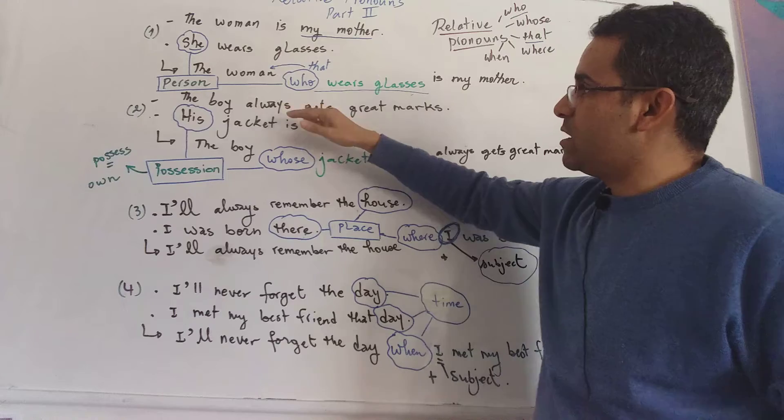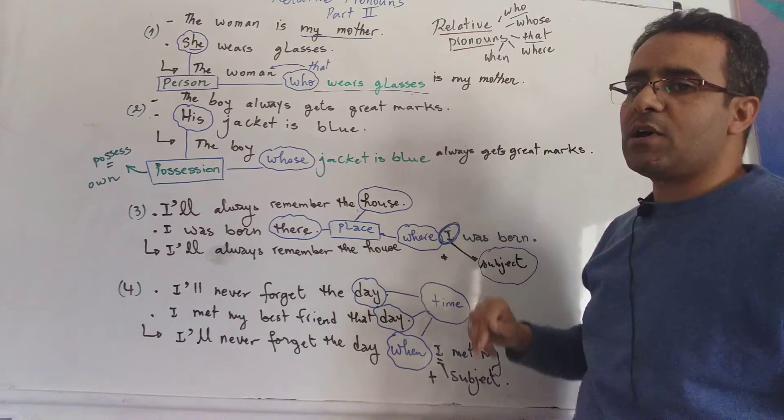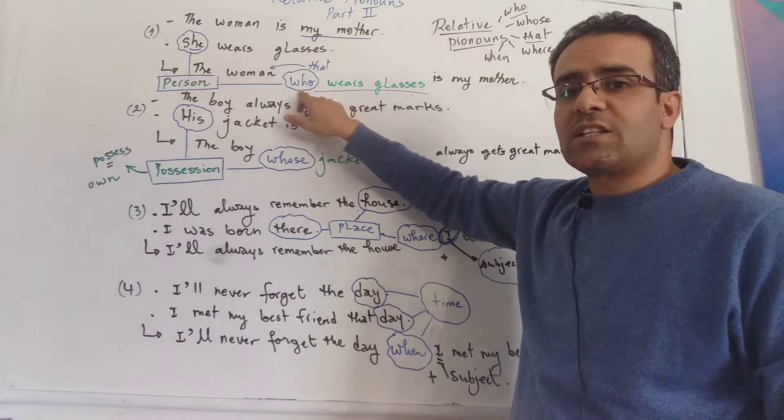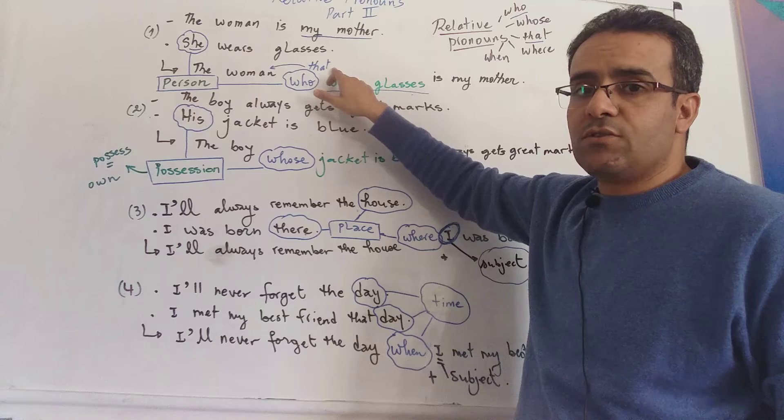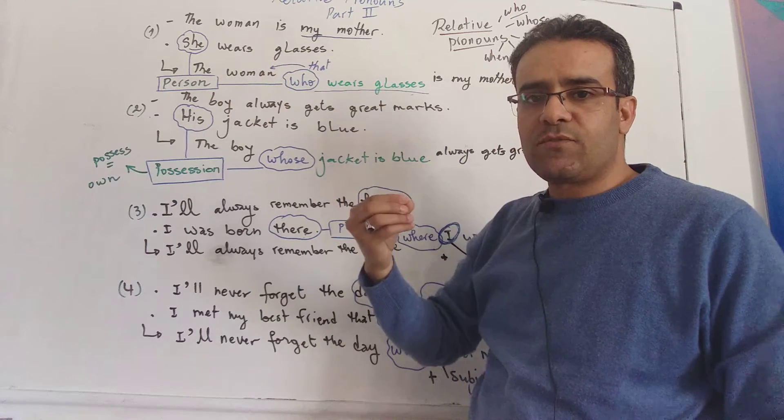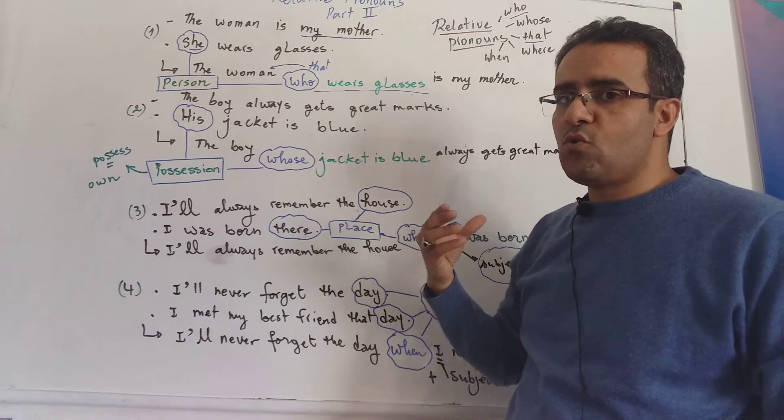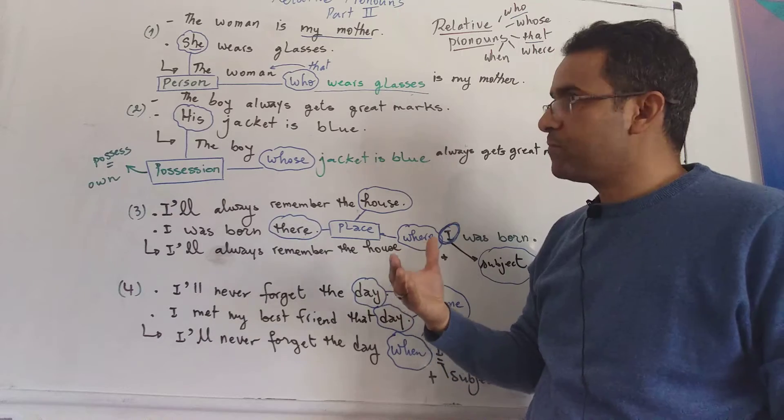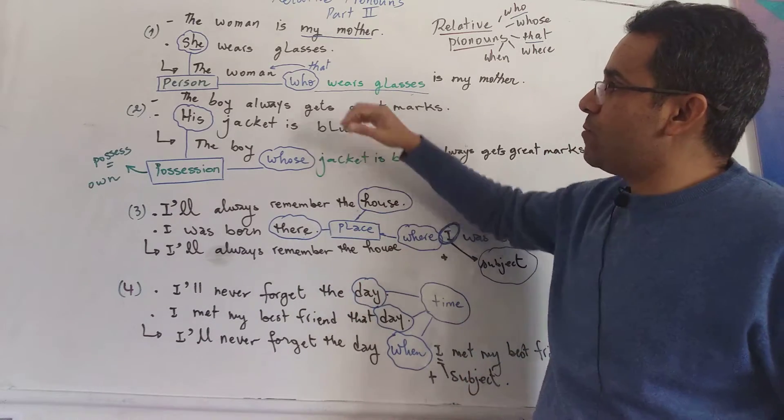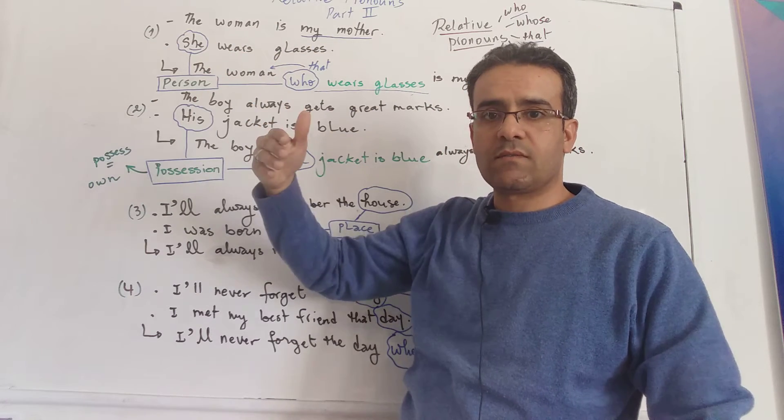Instead we can say the woman who wears glasses is my mother. What we're doing here, we use relative pronoun who or we can also use that to specify and clarify the woman we're talking about. So the woman who we are talking about is the one who wears glasses.